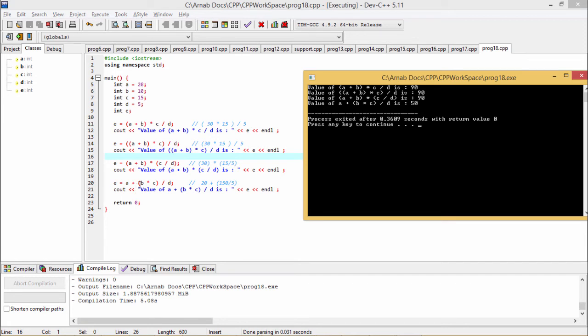But in the last expression, B into C. B is 10, C is 15, B into C is 150 by D. 150 by D, here we are getting D equal to 5, 30, and A is equal to 20, 20 plus 30, 50 will be the respective output. Yes, we are getting this 50 as the respective output.